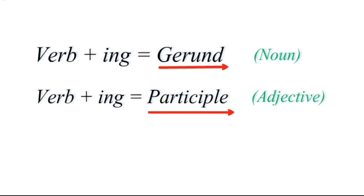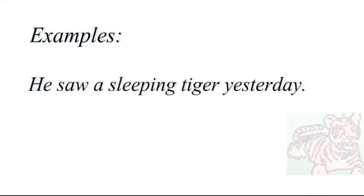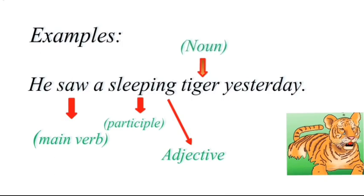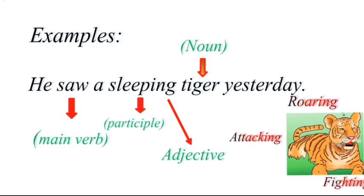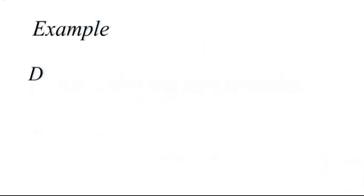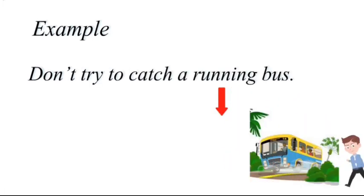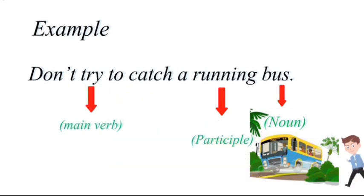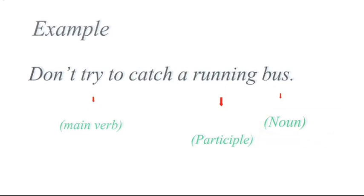'He saw a sleeping tiger yesterday' — 'saw' is the main verb and 'sleeping' is a participle functioning as an adjective for the noun 'tiger.' Similarly: an attacking tiger, a roaring tiger, a fighting tiger — all define 'tiger' and are used as participles. 'Don't try to catch a running bus' — 'running' defines 'bus' so it's a participle, and the main verb is 'try.'